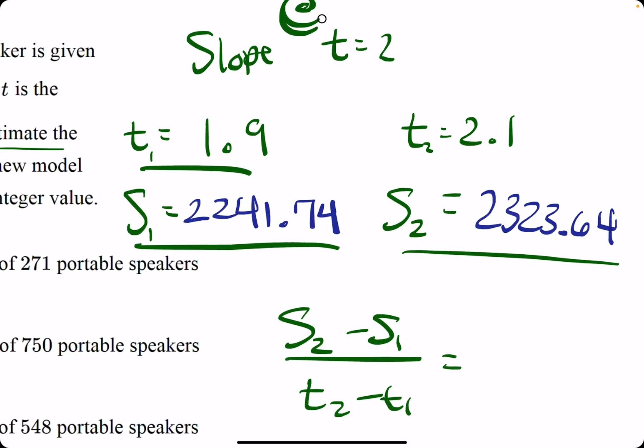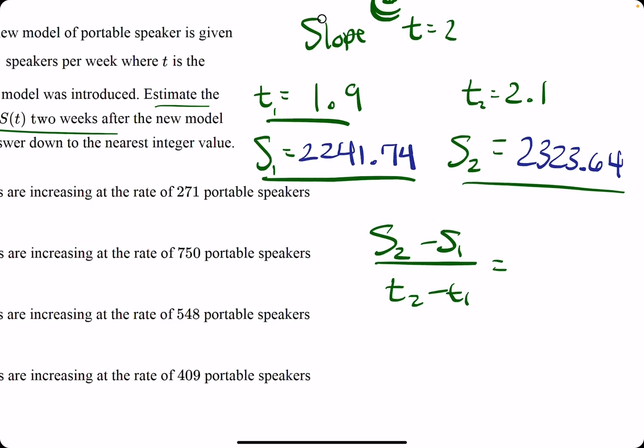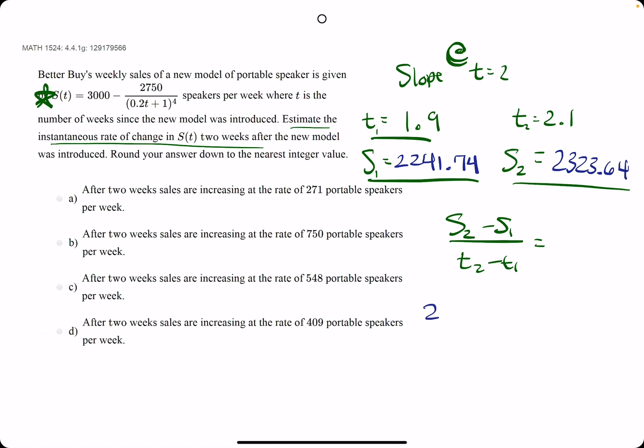2323.64. So now we will plug these values in to our slope formula. Basically, y2 minus y1 over x2 minus x1. In this case, s's and t's are our y's and x's, respectively.